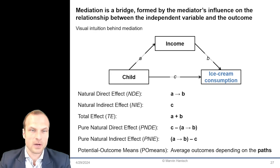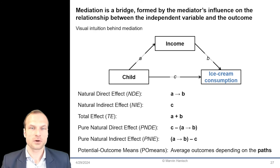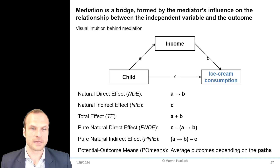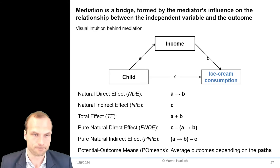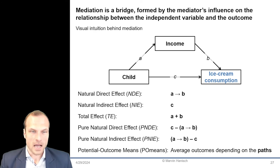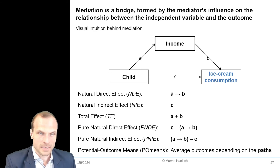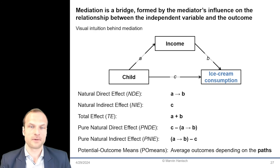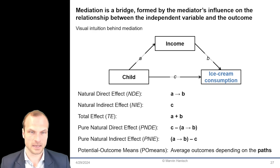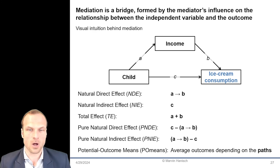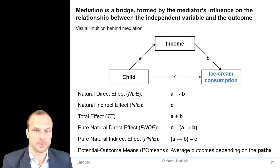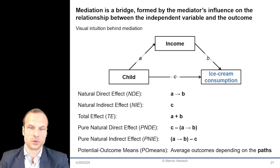Finally, we have the potential outcome means. These are the average outcomes we would expect to see under different conditions, like the average results if everyone took the detour or everyone went directly. These different outputs will be displayed once you run a mediation model and help you understand how much of the effect is because of the mediator and how much is independent of it. It's a way to dissect the journey from cause to effect into different routes and see which ones are being used and how much they contribute to the final outcome.